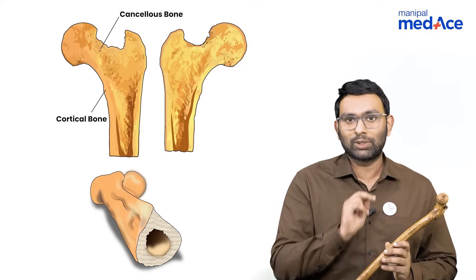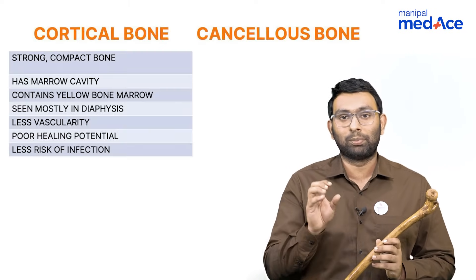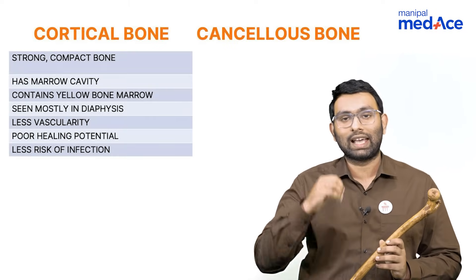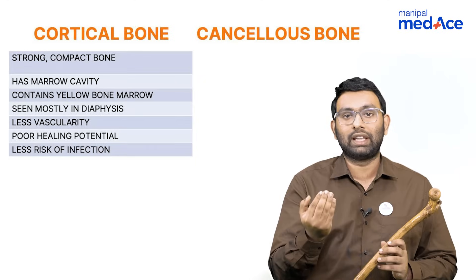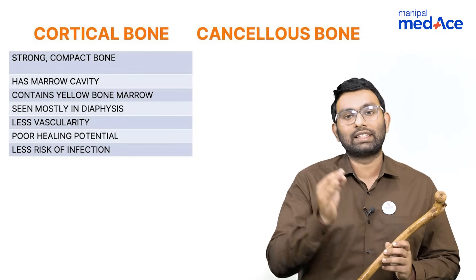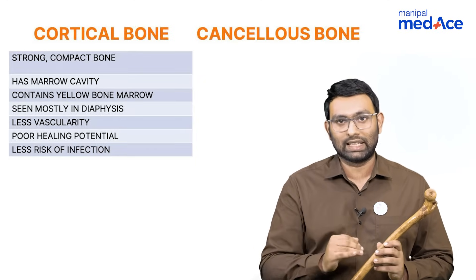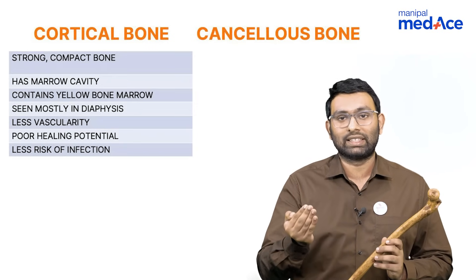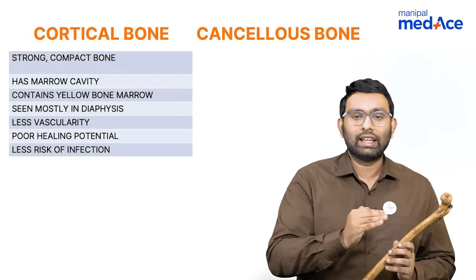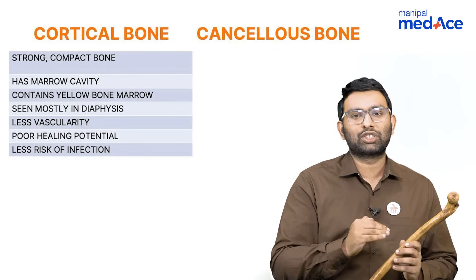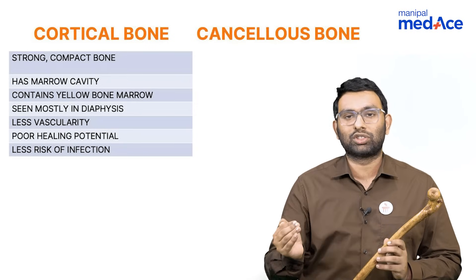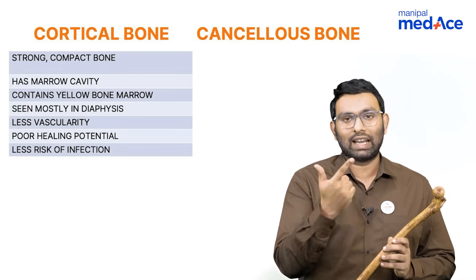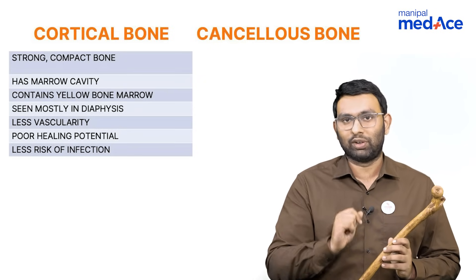The cortical bone is a compact bone that has a marrow cavity and yellow marrow cells. It is more commonly seen in the diaphysis, and it has less vascularity — and because of that, less healing potential and less chances of infection.